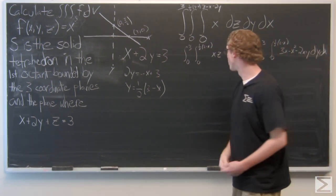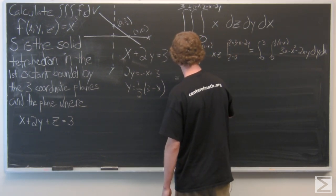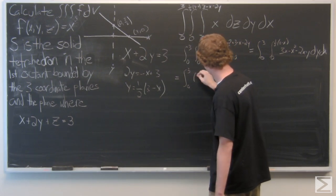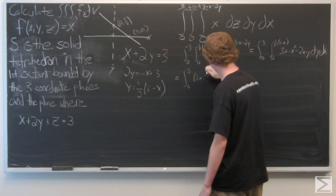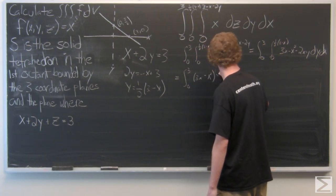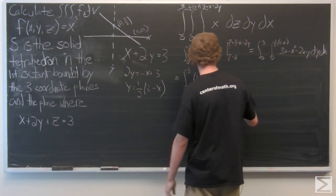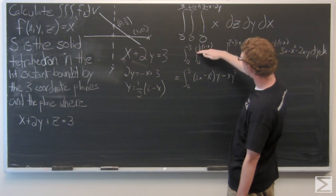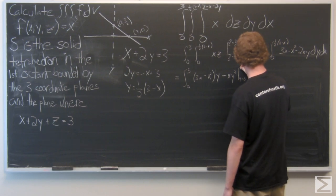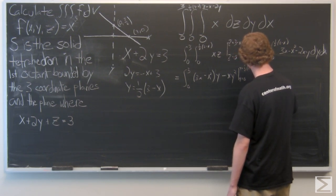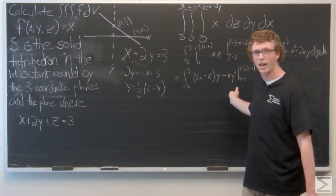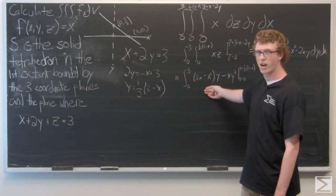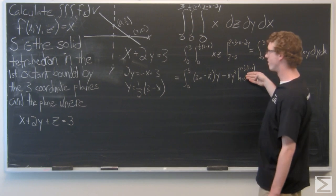Now we integrate with respect to y. The first term has no y in it, so it's treated as a constant. The negative 2xy term is going to become negative xy squared. We evaluate from y equals zero to y equals one-half times (3 minus x). Since each term has a function of y, both drop out at the lower bound, and we're only left with the upper bound.